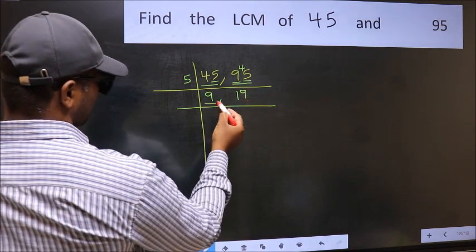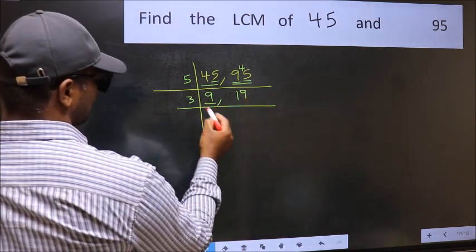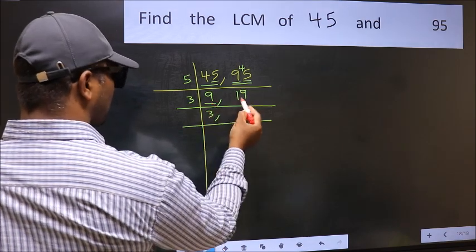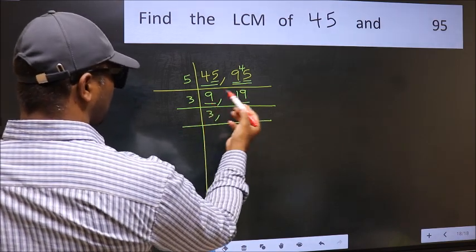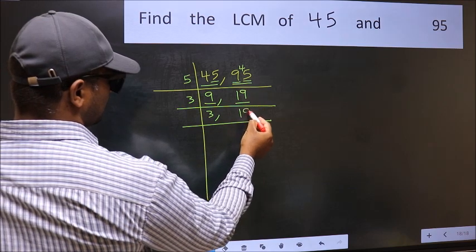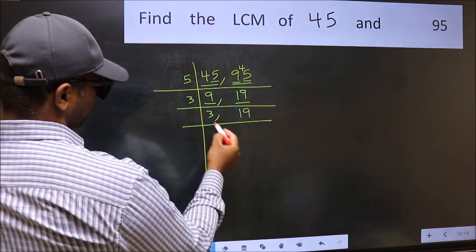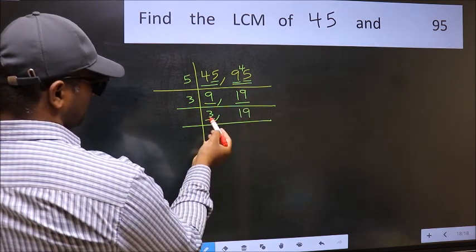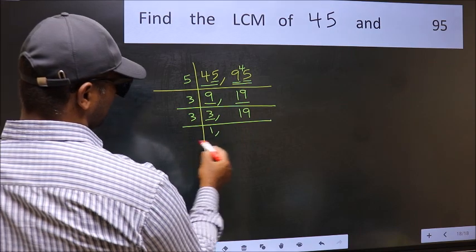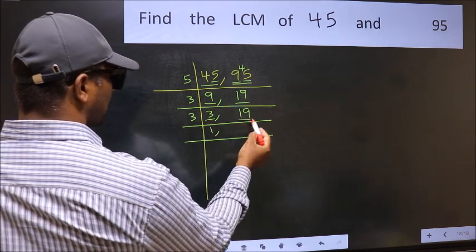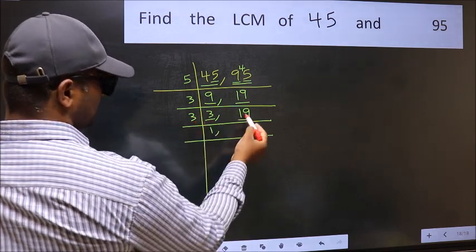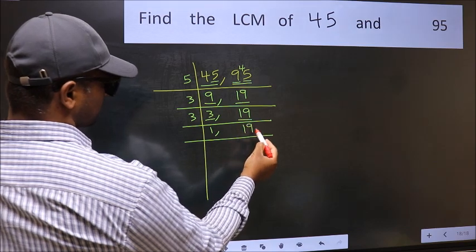Now we have 9. 9 equals 3 times 3. The other number, 19, is not divisible by 3, so write it down as it is. Now we have 3, which is a prime number — 3 once 3. The other number 19 is still not divisible by 3, so write it down as it is.